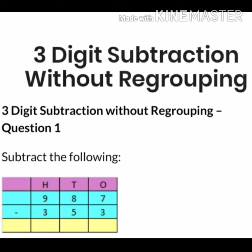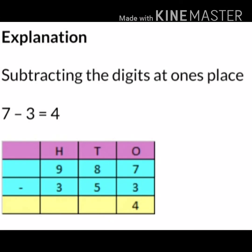Can you see the number 987? We have to subtract 353 from 987. So let's come to explanation part. Subtract the digit at ones place. Can you see the numbers at the ones place? 7 and 3. We have to subtract 3 from 7. Then 7 minus 3 gives you 4. Correct.